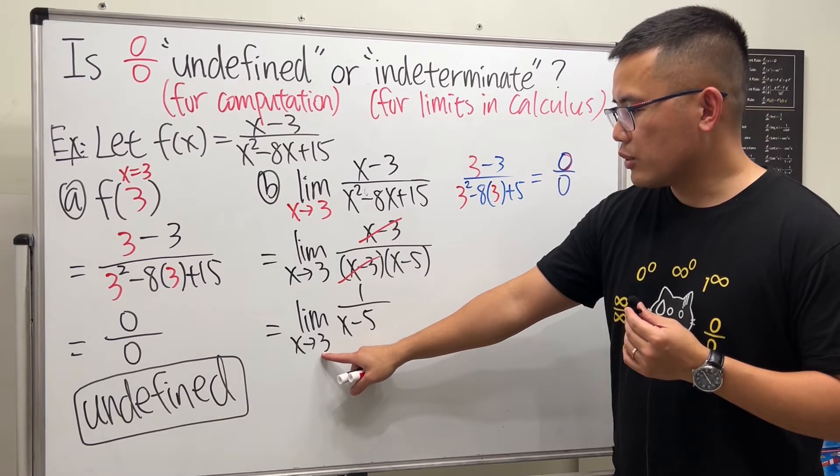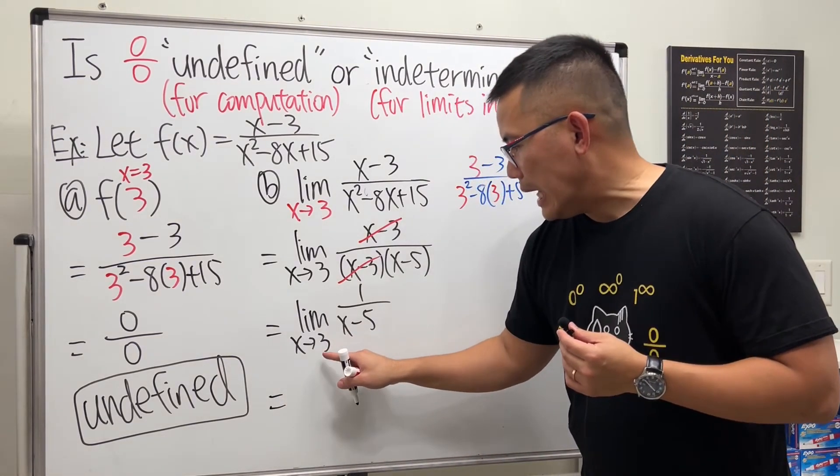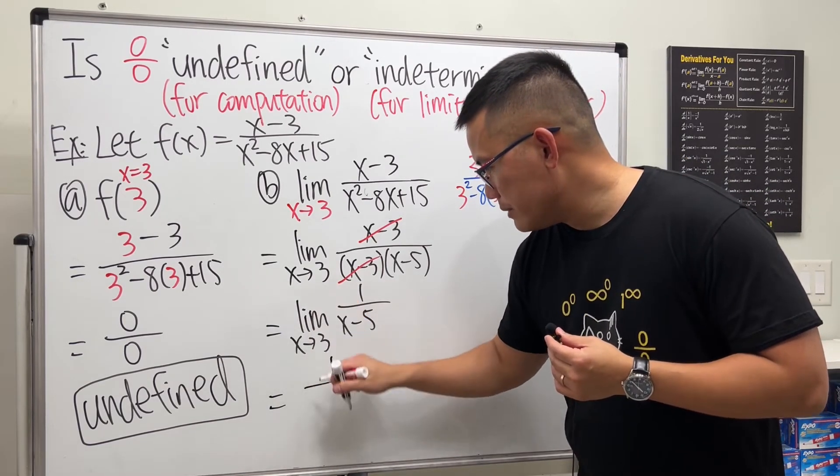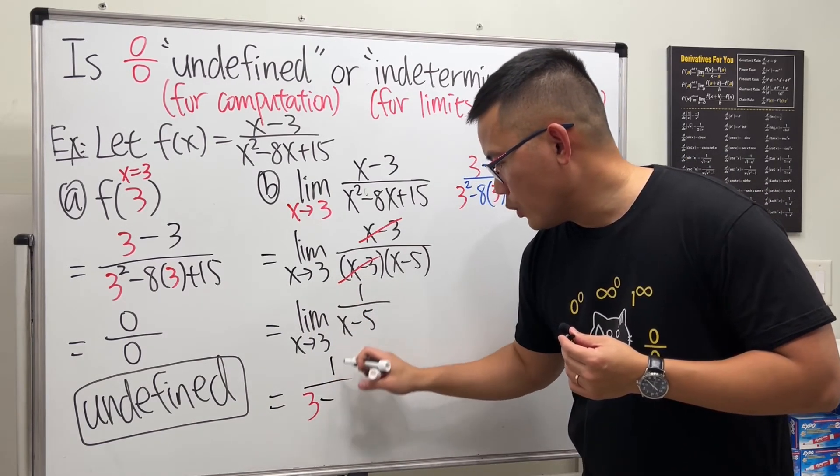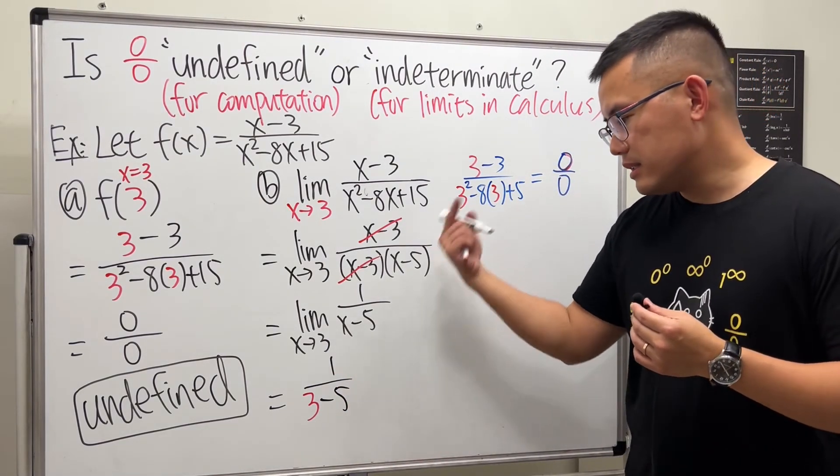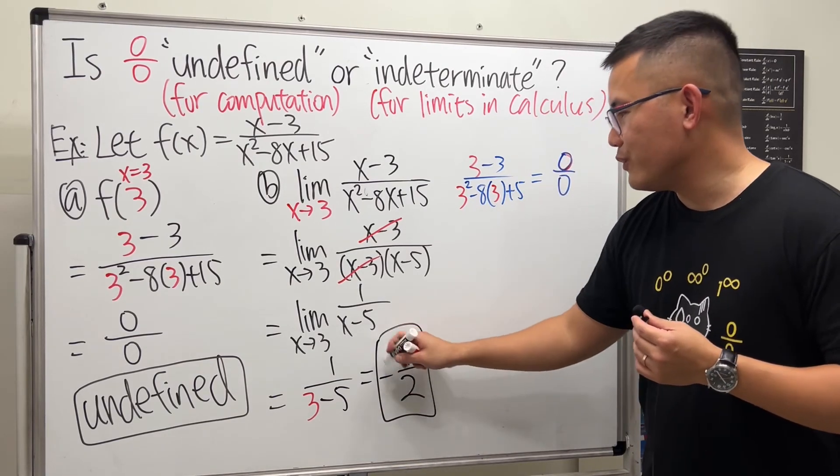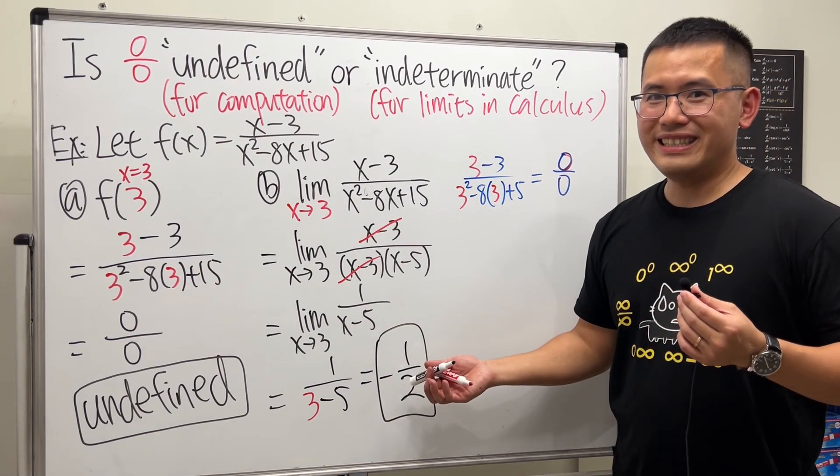Well, now let's go ahead and plug in this 3 into this x and see what happens. I'm plugging this number in, so no more limit symbol, and then I get 1 over 3 minus 5. And can we work this out? Yes, this is just a regular number, and that will be our answer. And we get negative one half. That's it.